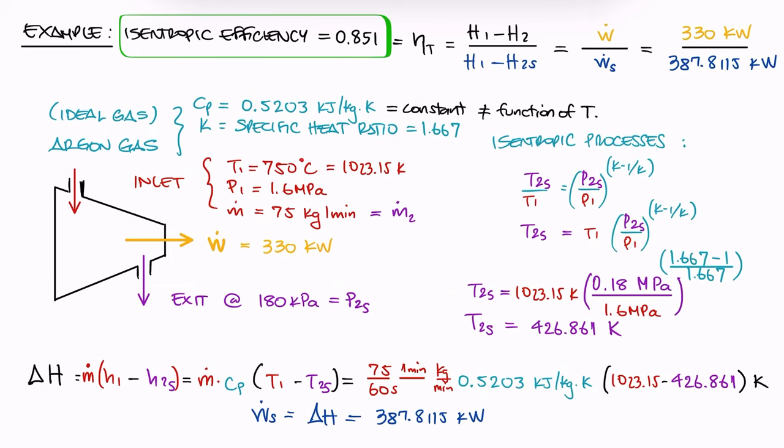Values for isentropic efficiency are important because they tell you how close to the most ideal scenario the device is. In this case, for a turbine, isentropic efficiencies closer to 1 mean that the turbine is a good turbine, and that its design is worth a higher price.